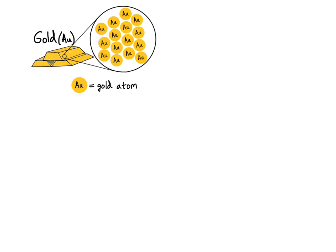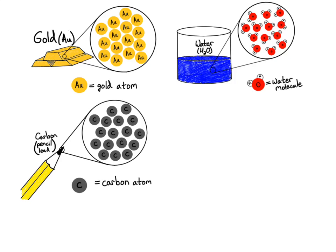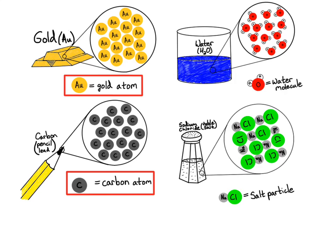We'll review some substances from the previous video. We've got the element gold and the element carbon — two elements. We also talked about compounds: water, made up of water molecules, and sodium chloride, or table salt. If we could see the particles that make up gold, we'd see it's simply made up of gold atoms and nothing else — just one type of atom. Likewise, carbon is made up exclusively of carbon atoms.